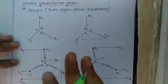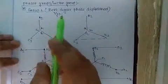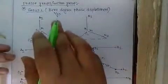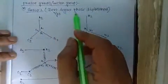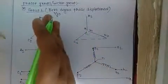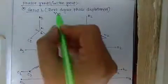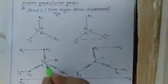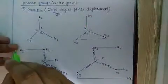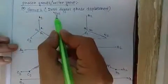First I draw YY0 — capital Y for the high voltage side, small y representing the low voltage side, and zero representing the zero degree phase displacement. For YY0, capital A1, A2 and small a1, A2 of phase A are drawn in parallel.